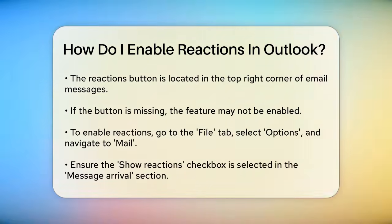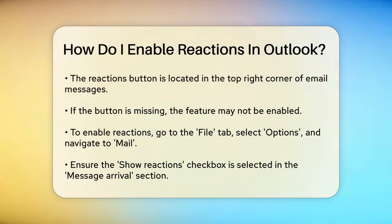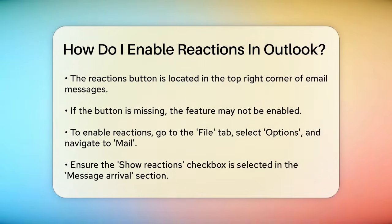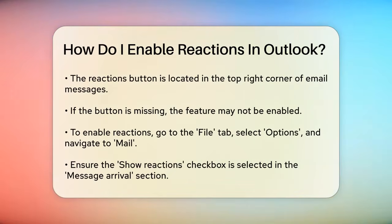Here's how you can enable it. Go to the File tab in Outlook, then select Options and navigate to the Mail section. In the Message Arrival section, make sure the Show Reactions checkbox is selected. This ensures that the Reactions feature is turned on for your account.